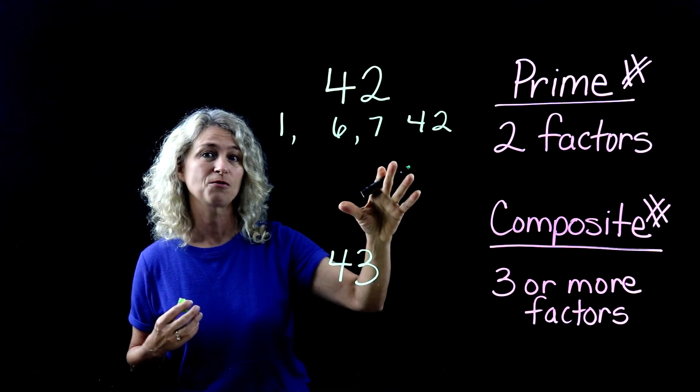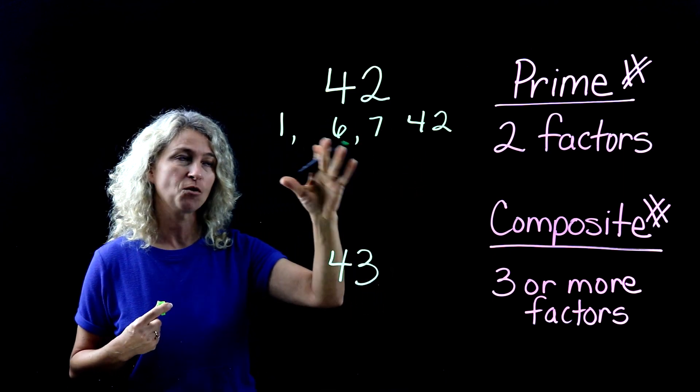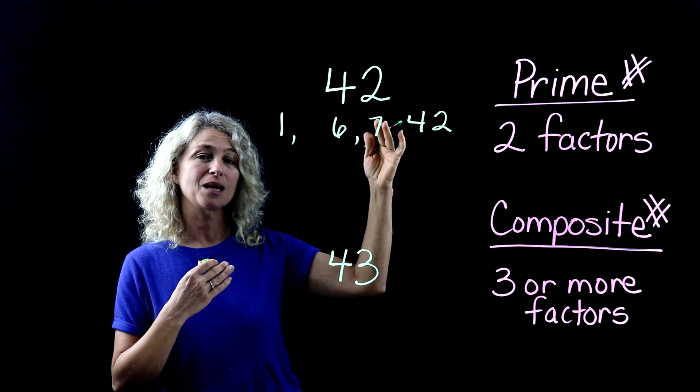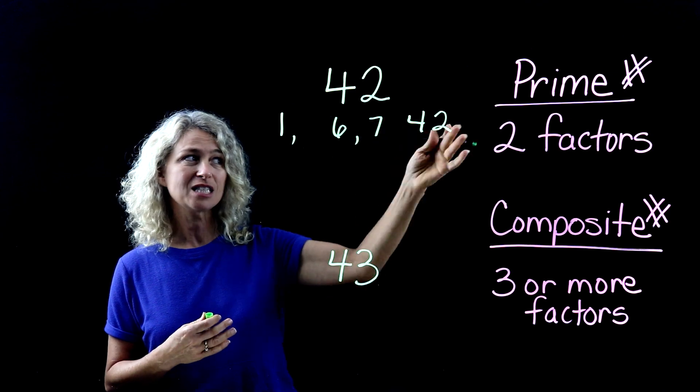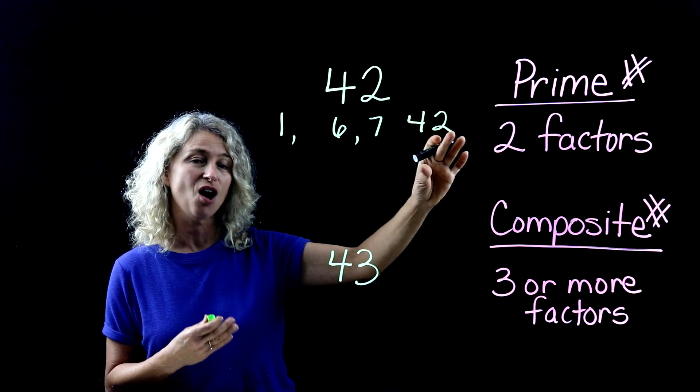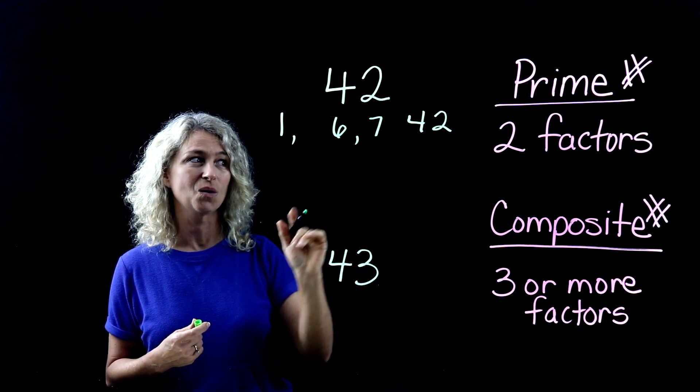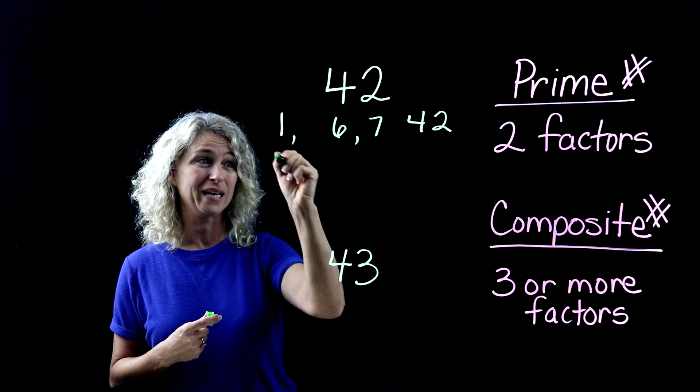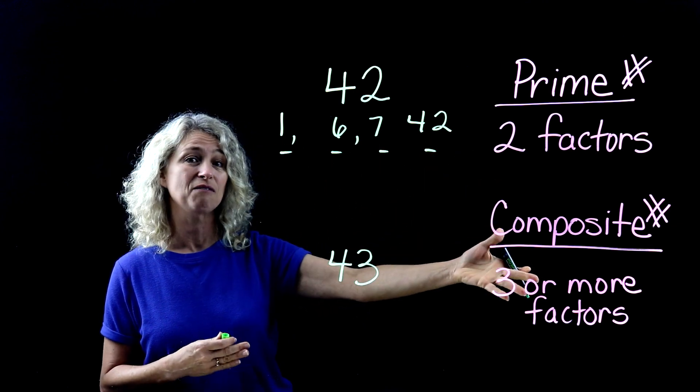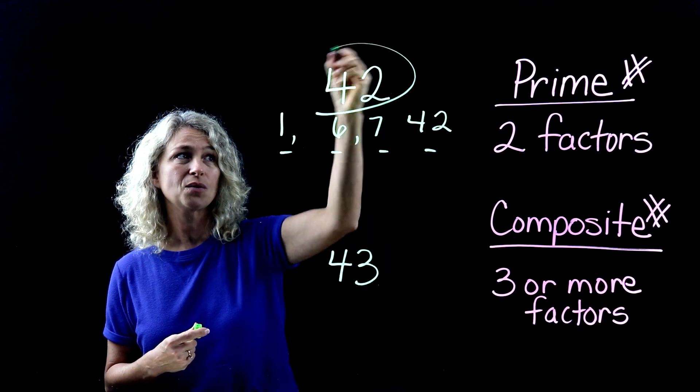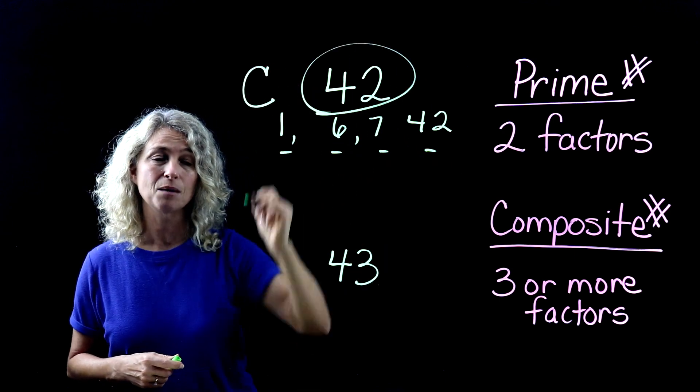Now there are other factors as well for 42. You could say two times 21. But just to determine whether it's prime or composite, you don't have to list out all the factors. You just have to know, is it two factors or is it three or more? And we know that this is definitely three or more. So 42 is going to be definitely composite.